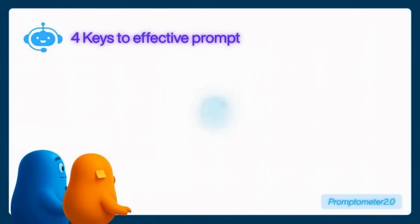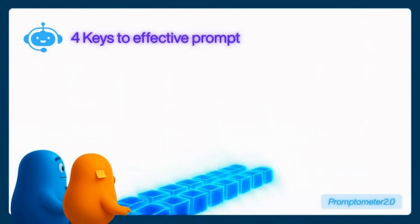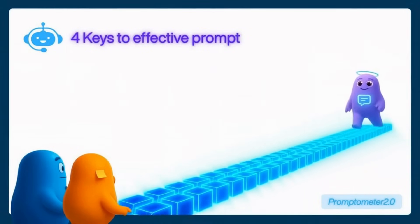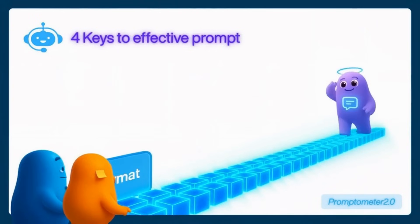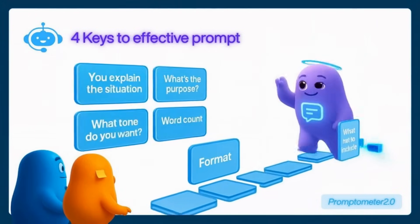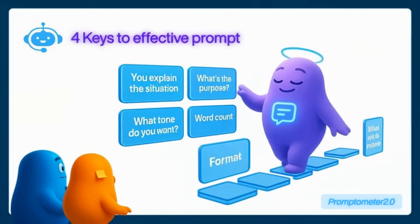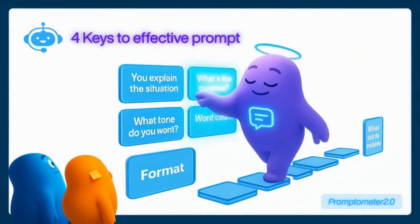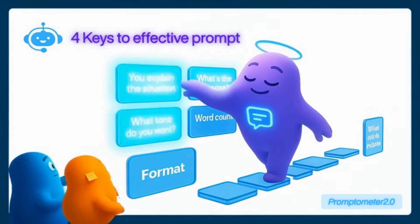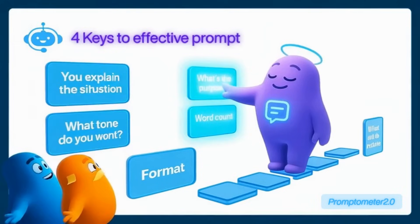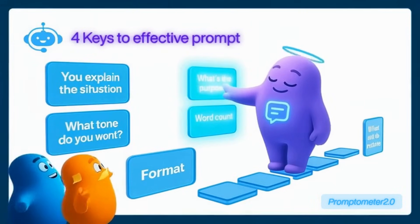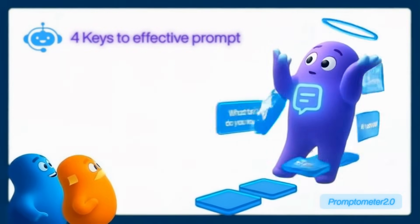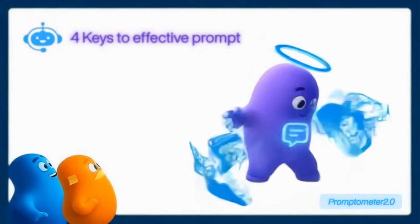Next is context and constraints — this is the heart of your prompt. You explain the situation, your goal, and the rules. Who is the audience? What's the purpose? What tone do you want? You can also set limits like word count, tone, format, or what not to include. Constraints actually give the model focus; they're like guardrails for the model's creativity.